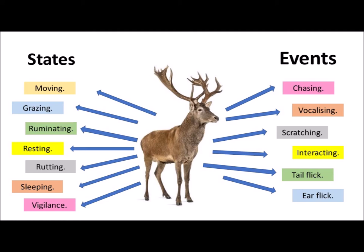In the case of my rutting stag, his state behaviours can be moving — the act of going from one place to another — grazing, the collection of food, ruminating, which is when he chews the cud, resting and sleeping, comfort or relaxation behaviours, rutting, which is his act of courtship display, and vigilance, where he looks out for danger. Those are all long duration behaviours that we can time and put into what we call a time activity budget, which tells us about the amount of time proportioned to those behaviours. Time equates to energy and therefore motivation.